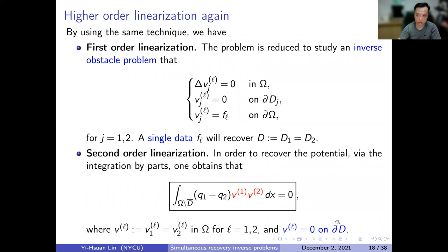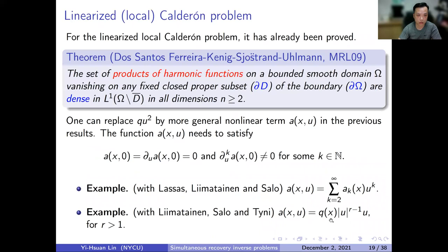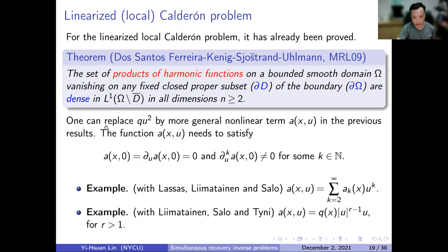There is a classical paper by Isakov and Nachman (2009) proving that the set of products of harmonic functions on a bounded domain, vanishing on a fixed closed proper subset of the boundary, is dense in L1. This uses a variant of the Runge approximation and complex analysis techniques. Based on this, we can recover the coefficient Q in the annulus domain.